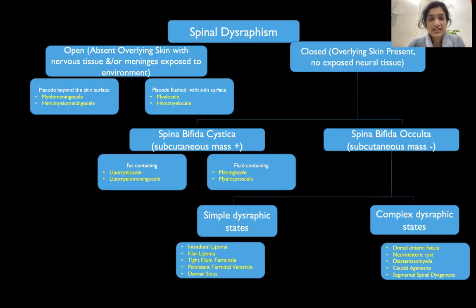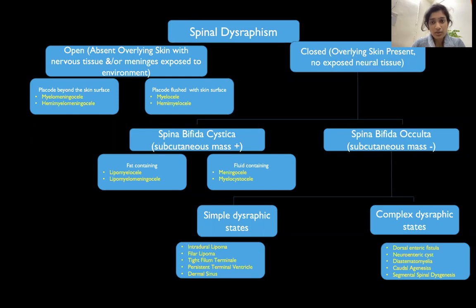Coming to the classification, spinal dysraphism can be open or closed type based on the presence or absence of overlying skin. In open type, the overlying skin is absent and the nervous tissue and/or meninges is exposed to the environment. It is classified based on the position of the placode — beyond the skin surface as in myelomeningocele or hemimyelomeningocele, or flushed with the skin surface as in myelocele or hemimyelocele. Closed spinal dysraphism can be spina bifida cystica, where there is a subcutaneous mass, or spina bifida occulta, where there is no subcutaneous mass.